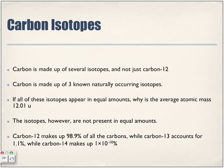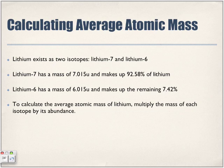So calculating average atomic mass: lithium exists as two isotopes, lithium-7 and lithium-6. Lithium-7 has a mass of 7.015 u and makes up 92.58% of lithium. Lithium-6 has a mass of 6.015 u and makes up the remaining 7.42%.